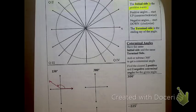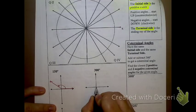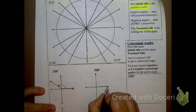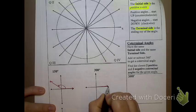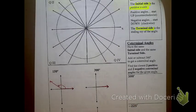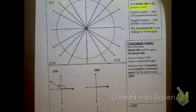300 degrees. My initial side is always right here. 300 degrees — how far do I have to open up my fan? Do I have to open it to the first quadrant, second quadrant, third quadrant, or fourth quadrant? Fourth quadrant.